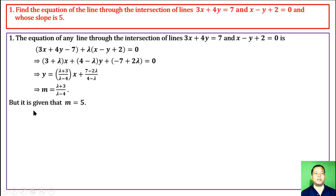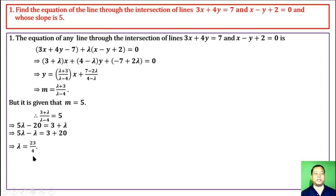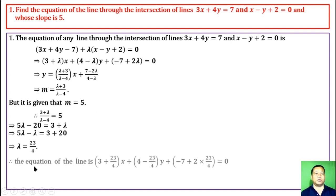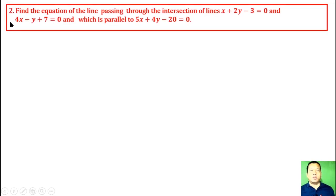But it is given that m = 5. Setting these two expressions equal, cross-multiplying and solving for λ, we get λ = 23/4. Putting this value into the above equation and solving, we get the required equation of the line.